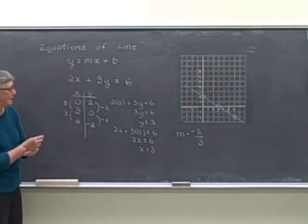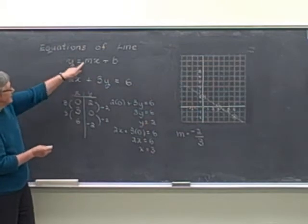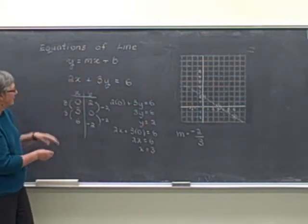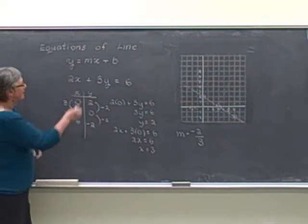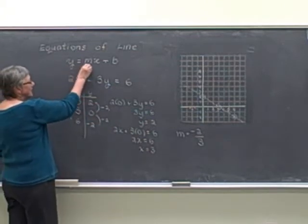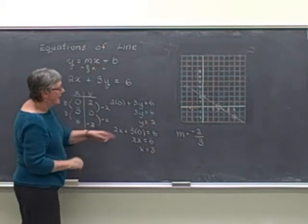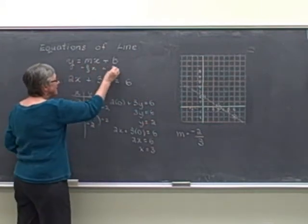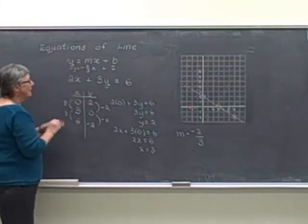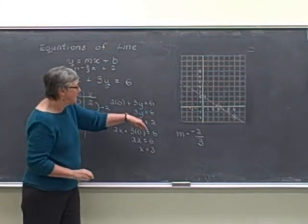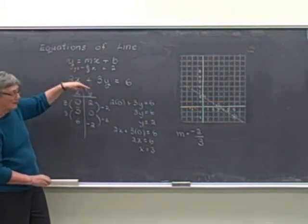Now we could actually use the information that we have on the graph to write this equation in slope-intercept form. If I just look at what we know from the graph, the slope was equal to negative 2 thirds, and the intercept was 2. So we would have the equivalent equation, y is equal to negative 2 thirds x plus 2. And now we've got an equivalent equation, different form.